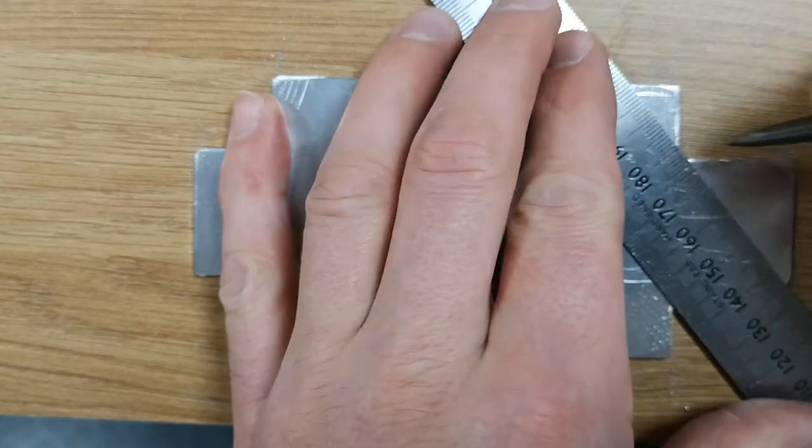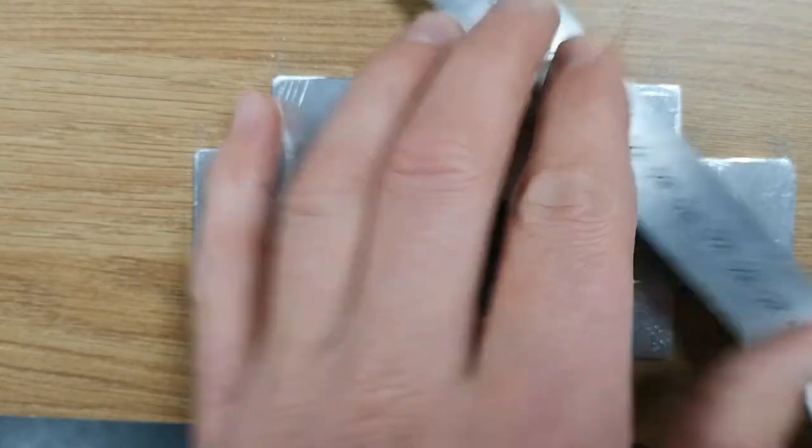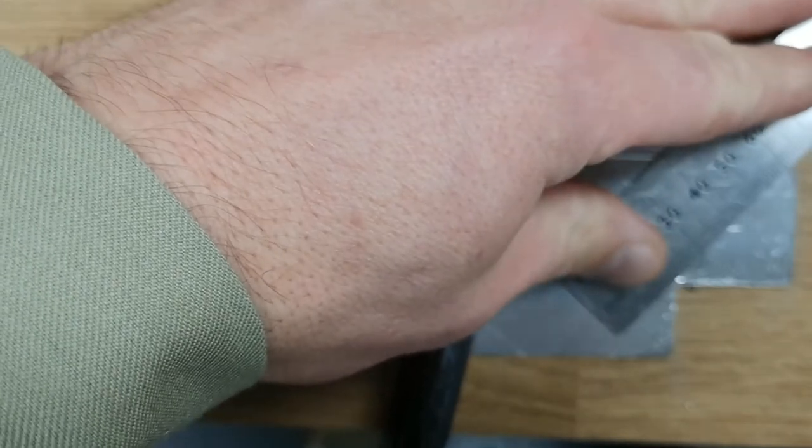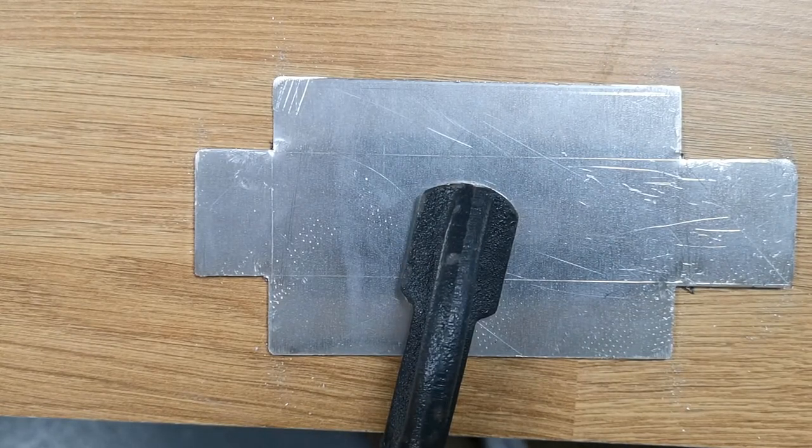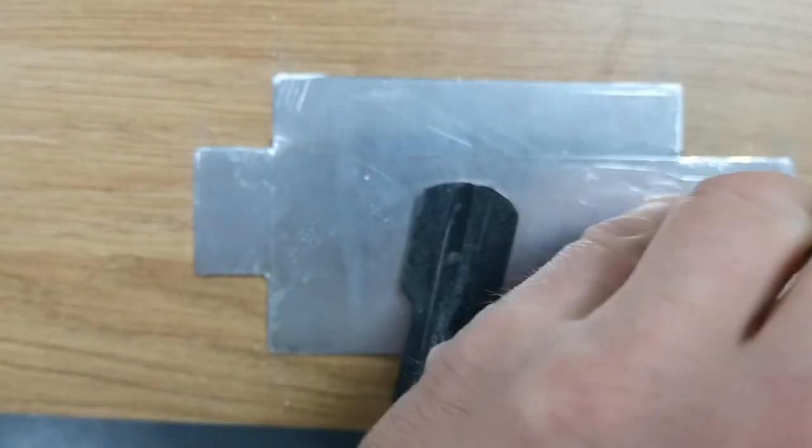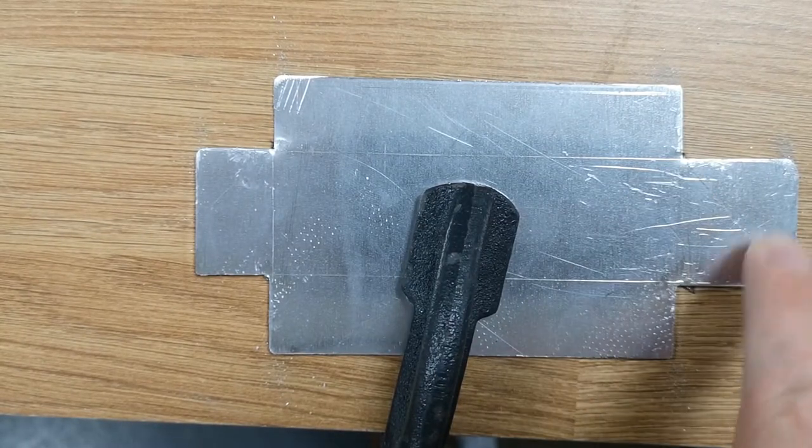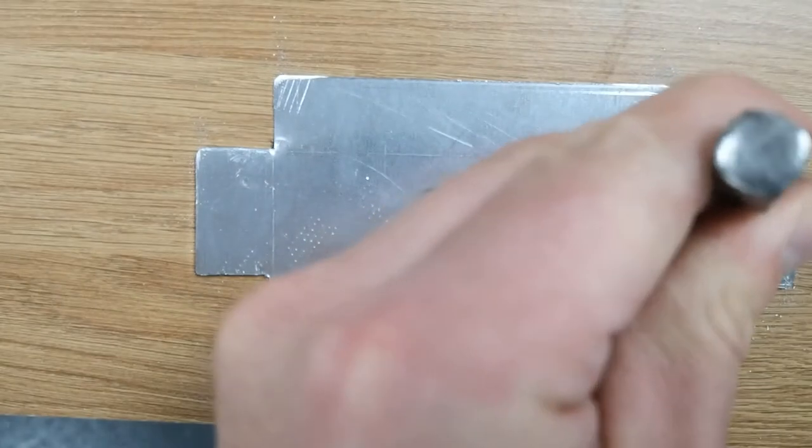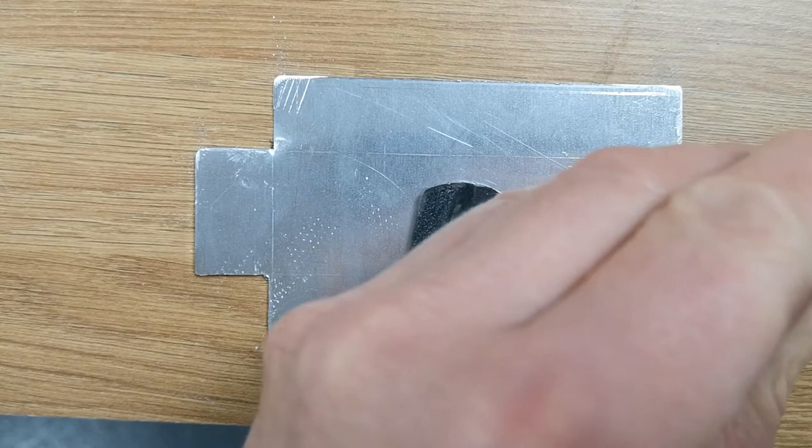So to find the center, really simple, just need to draw a cross from corner to corner. Right, so using the center punch and hammer to put a little small dent right on the intersection of those scratch lines. Little dent in there for preparation for when we come to drill it.